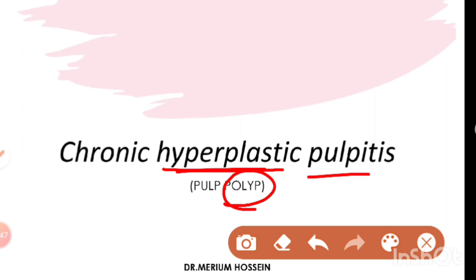The third word is 'pulpitis.' Pulpitis basically refers to an inflammatory condition involving the pulp tissue.